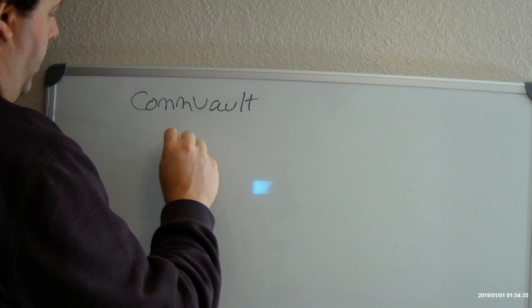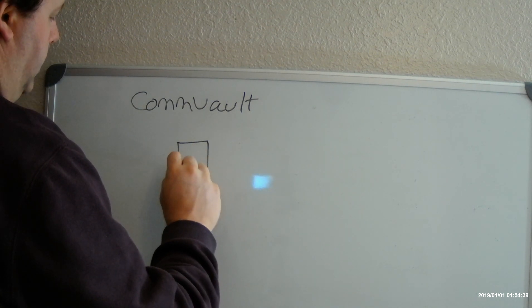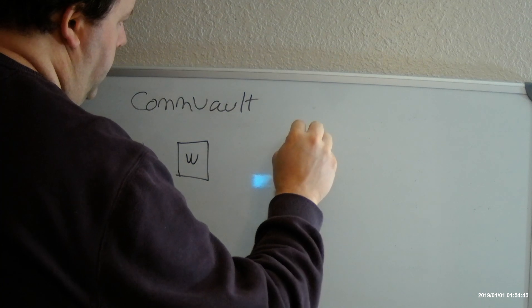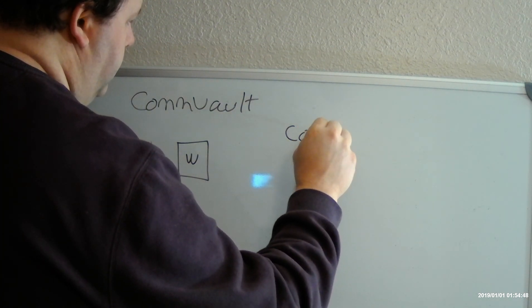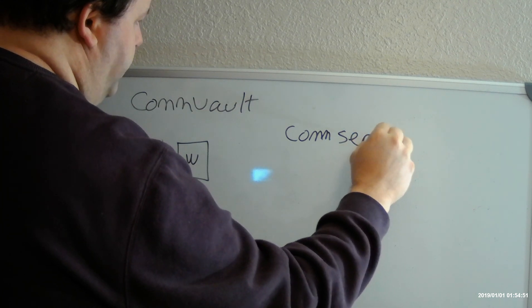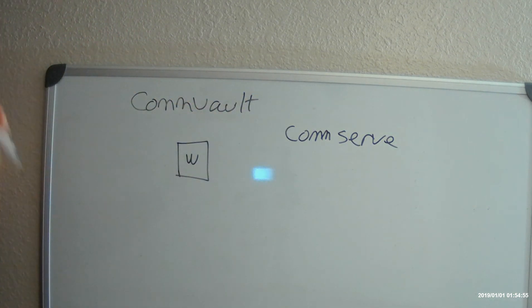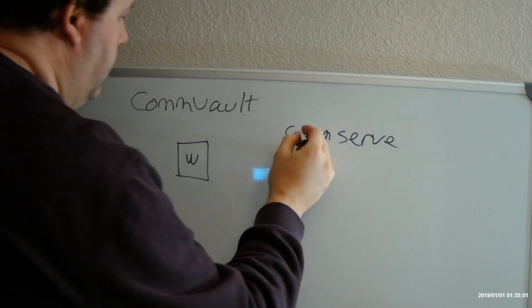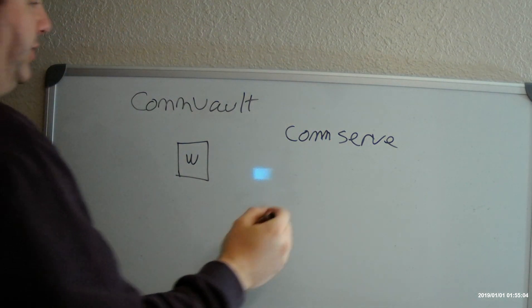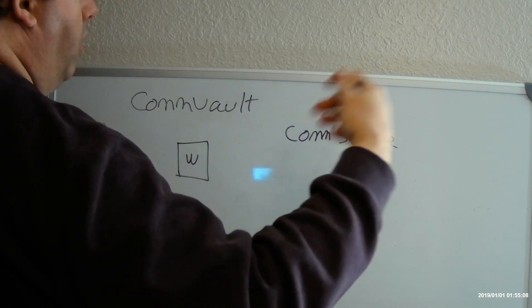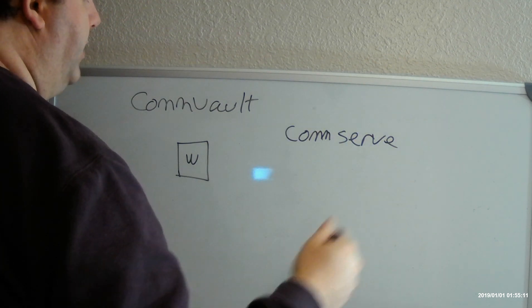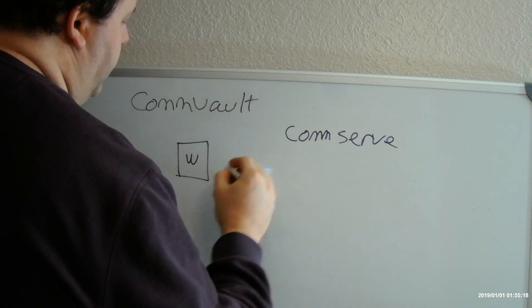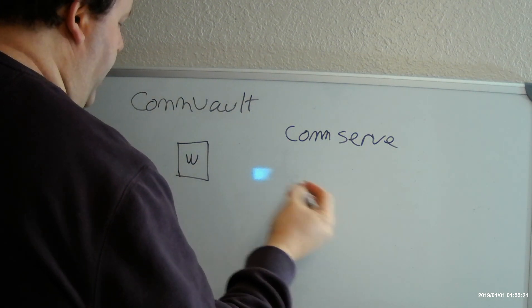You can install the software on a Windows box. The first part of Commvault is what they call a commserve. The commserve can only be installed on a Windows box, nothing else. The commserve is like the brains that gives out orders, gives out assignments, and does the inventory of what's been backed up. So we'll call that the brains.